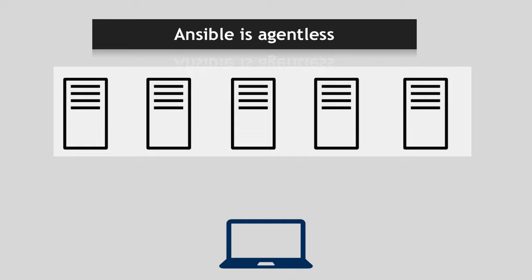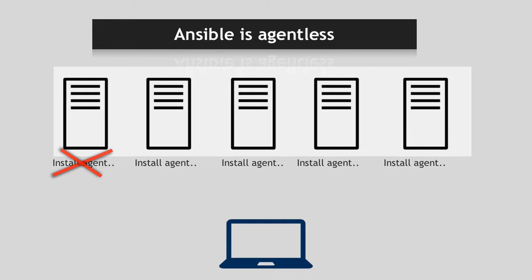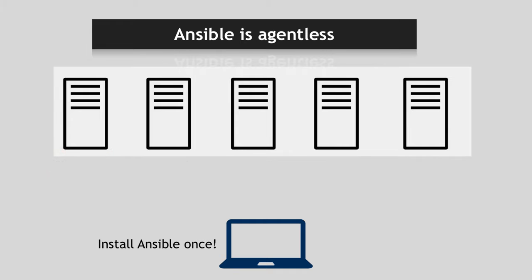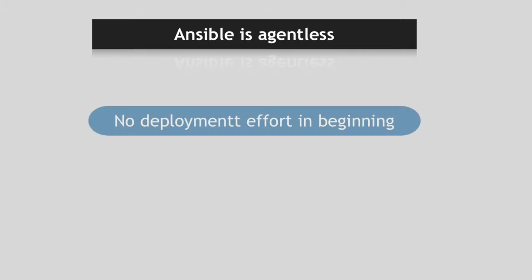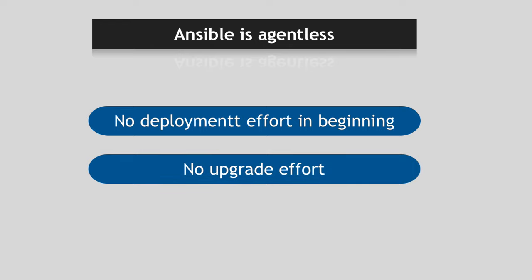What does agentless mean? Normally when you want to use some tool on a machine, you need to go to the machine and install an agent. With Ansible, however, you don't have to install anything on the target servers. You just install it on one machine — your control machine, which could even be your laptop — and that machine can now manage a whole fleet of target machines remotely. This means no deployment effort at the beginning and no upgrade effort when moving to a new Ansible version.